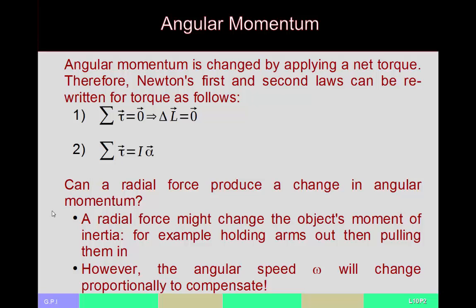If you have a purely radial force acting on an object, it changes the object's moment of inertia, assuming it's not exactly the centripetal force. If it exceeds or does not match the centripetal force, this net radial force allows the object to move farther away or closer in, changing the moment of inertia. The angular speed will then change to compensate, but the angular momentum remains constant.